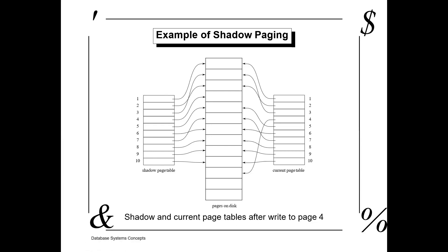If the transaction completes successfully, there is no issue. When the transaction is successful, we copy the current page table information to the shadow page table, saving whatever information is in the current page table to the shadow page table, and from the shadow page table back to the disk. If the transaction completes successfully and the commit operation is performed — this is a simple example of shadow paging.